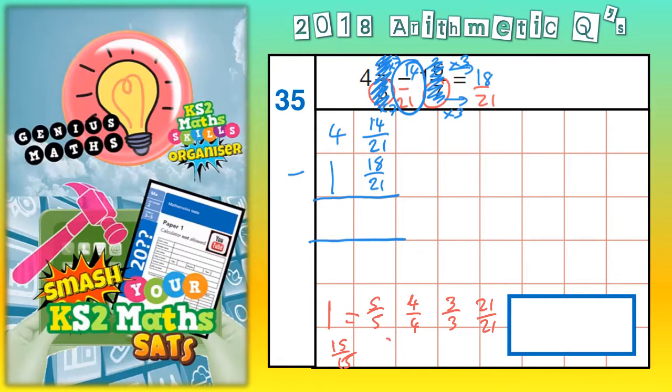A whole one is 19 19ths. A whole one is 91 91ths. So we've got to remember that about a whole one.